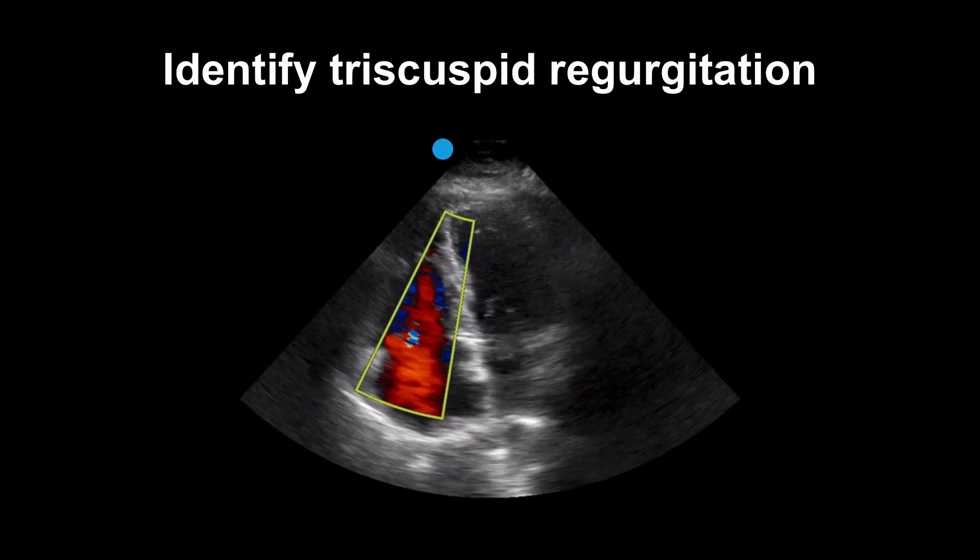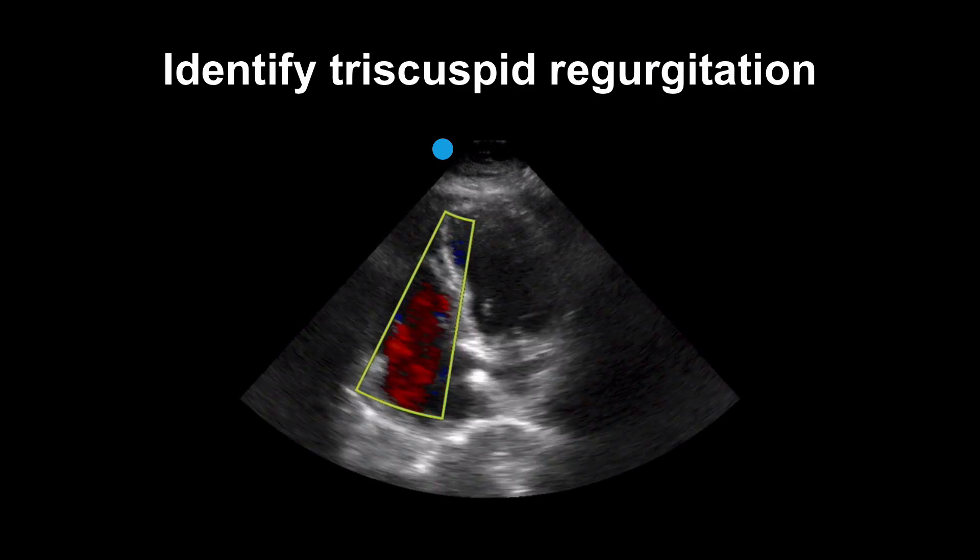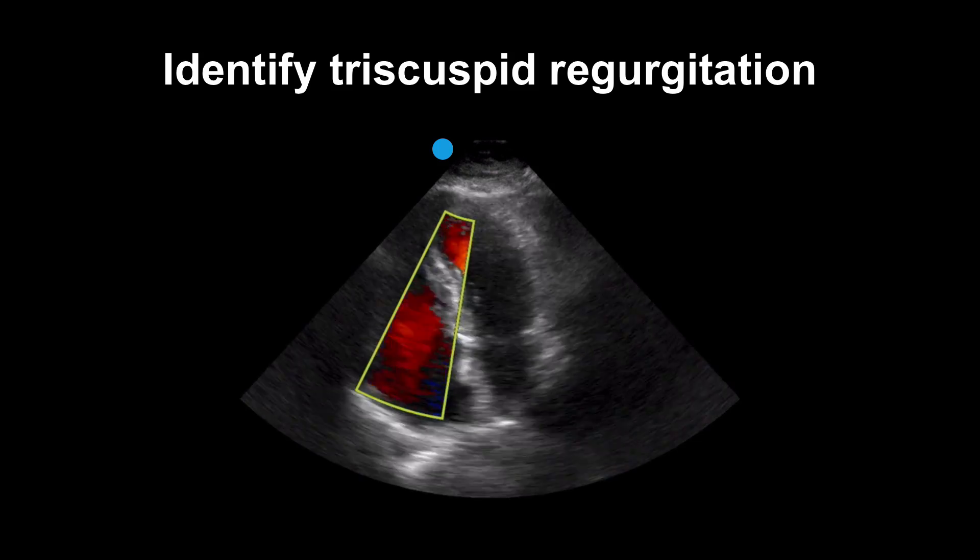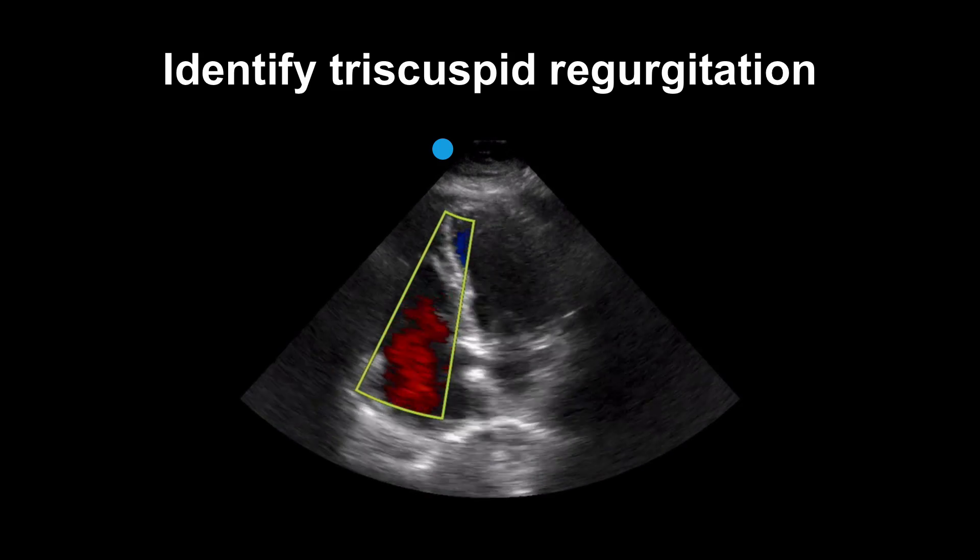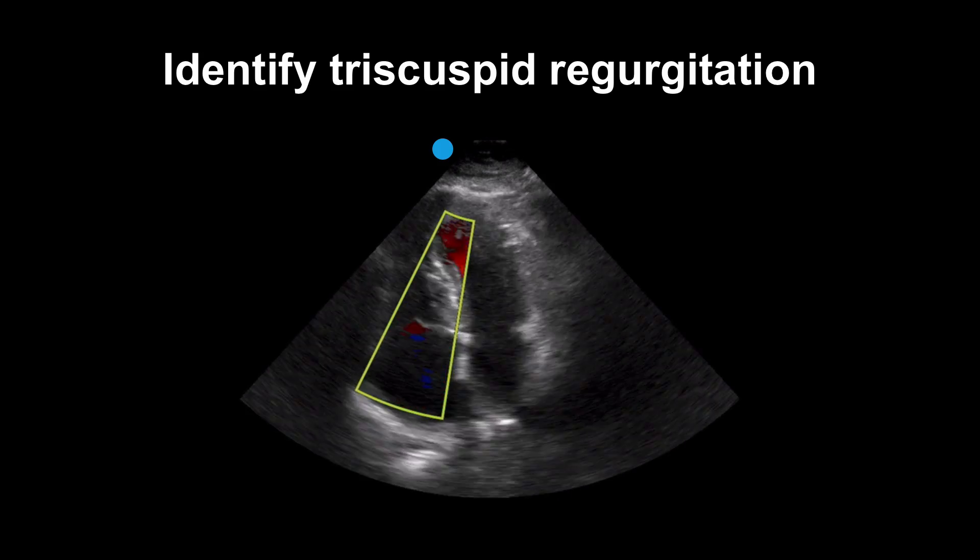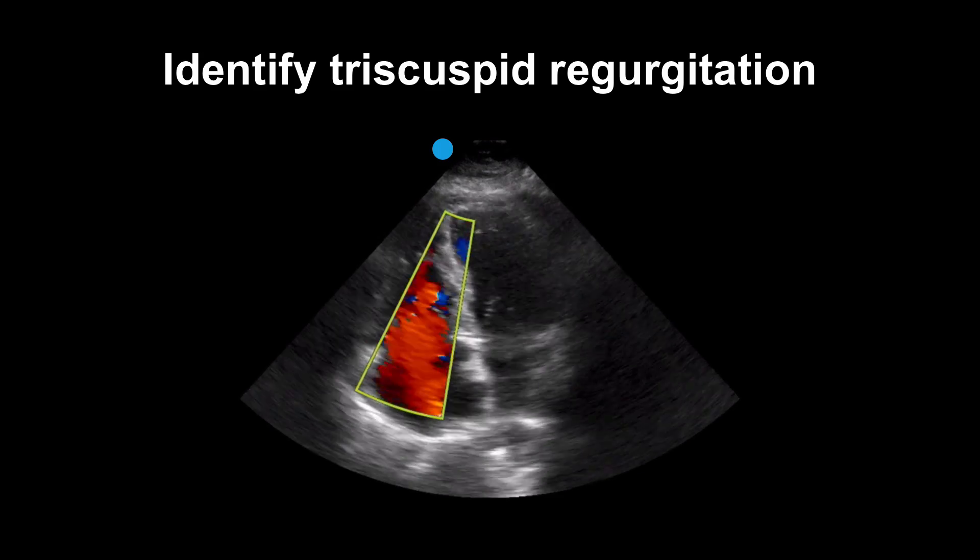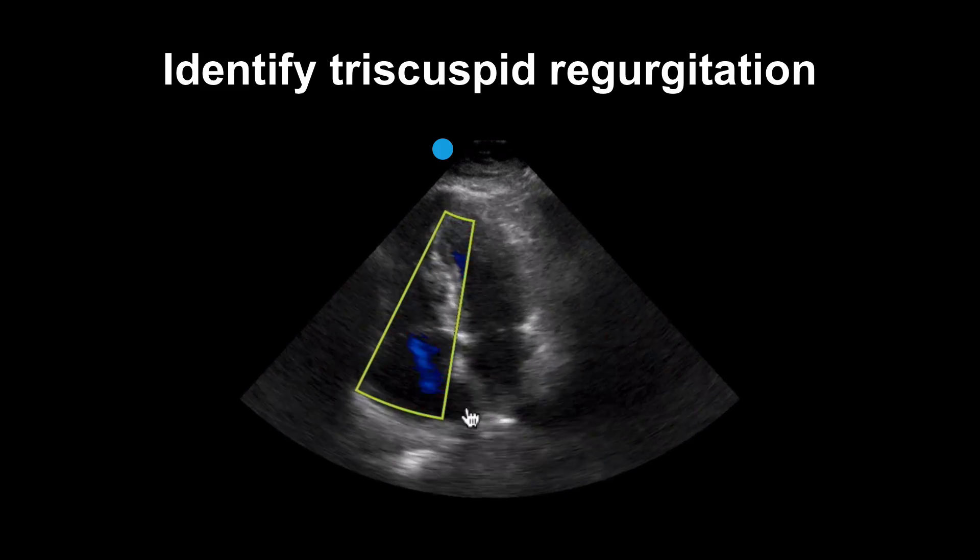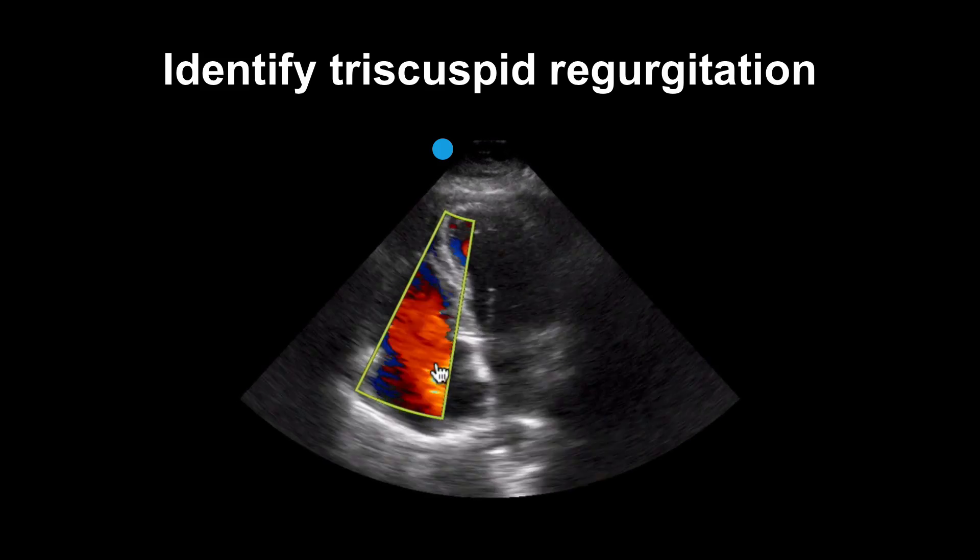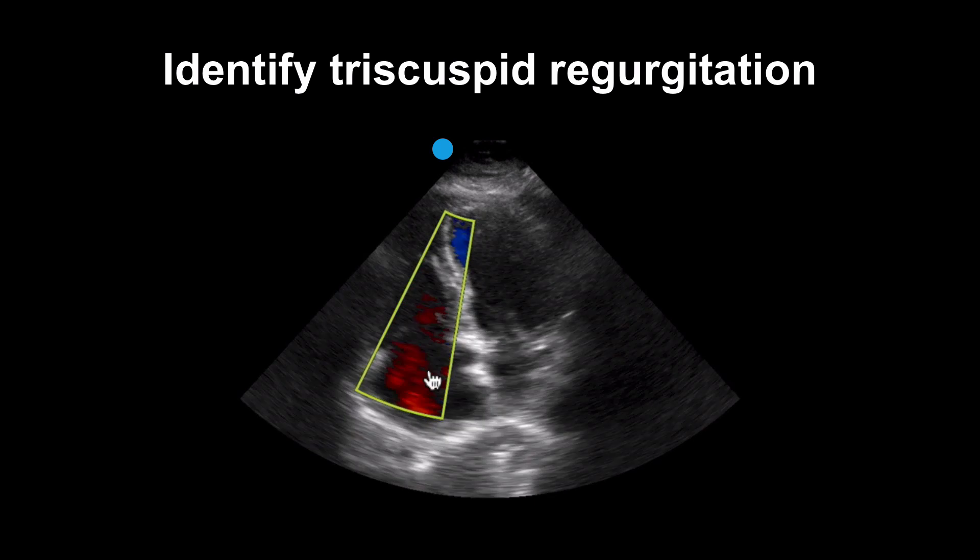Our first step is to be able to identify tricuspid regurgitation. To do this, we will activate a color Doppler box, seen here, and place it over the tricuspid valve in an apical four-chamber view. We'll identify a regurgitant jet using color Doppler. You can see the regurgitant jet here, the blue signal coming back into the right atrium.